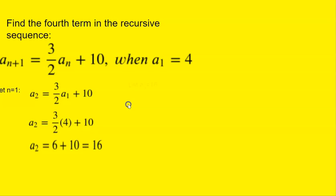We'll use a₂ to find a₃. Since a₂ is 16, a₃ = (3/2)a₂ + 10. 3/2 times 16 is 24, and 24 plus 10 is 34.